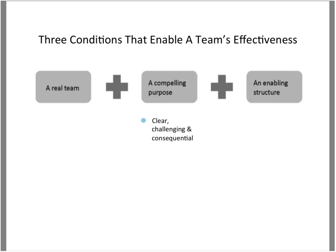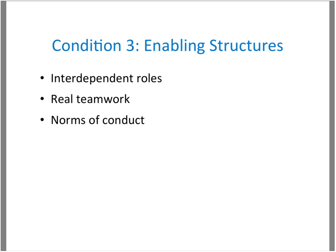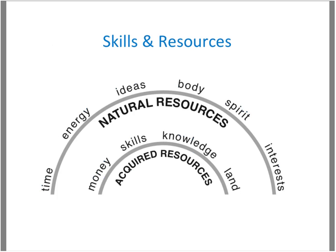Reflect on whether your team has a clear, challenging, and consequential purpose. If you haven't yet established a team, there are ways to establish that together and create time at the launch to co-own its purpose. The third condition is an enabling structure. Here we're looking at whether there are interdependent roles, real teamwork, and norms of conduct.